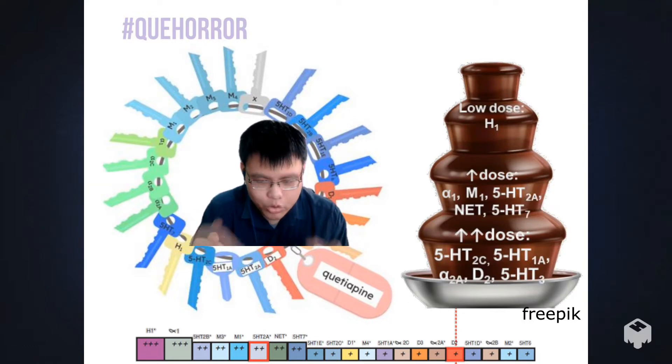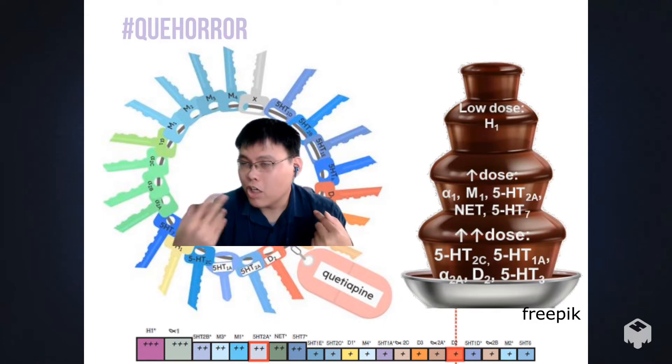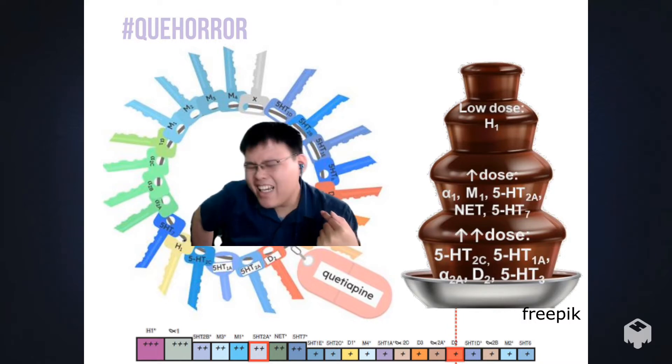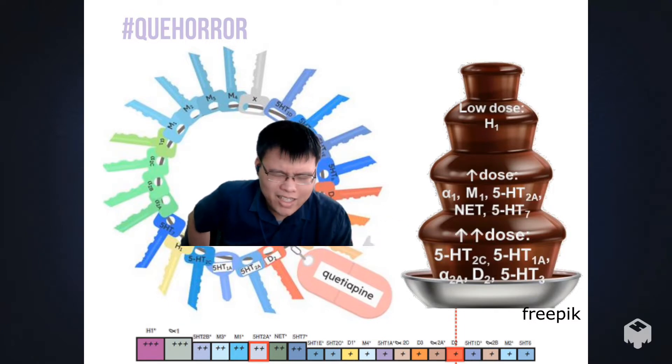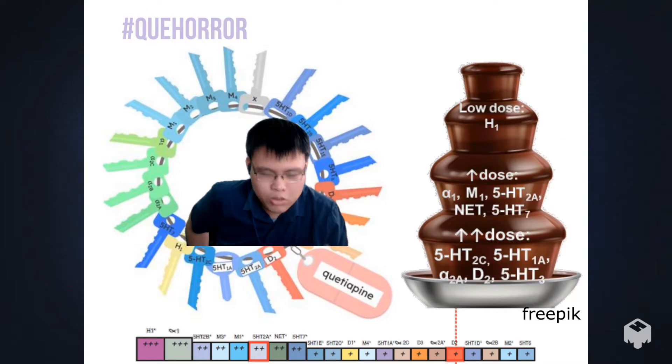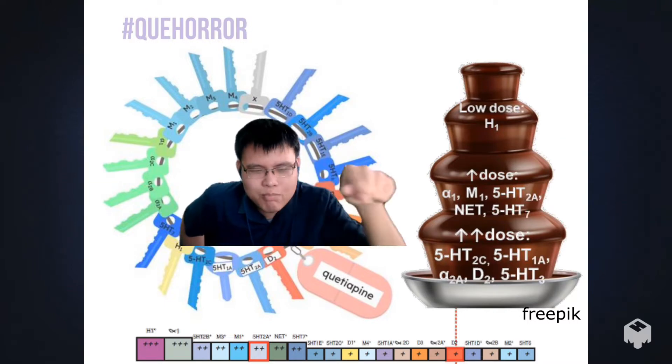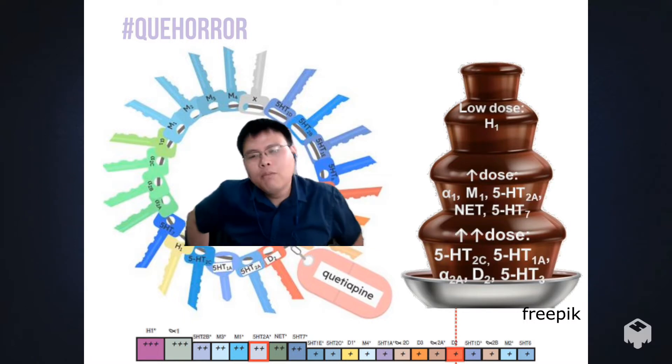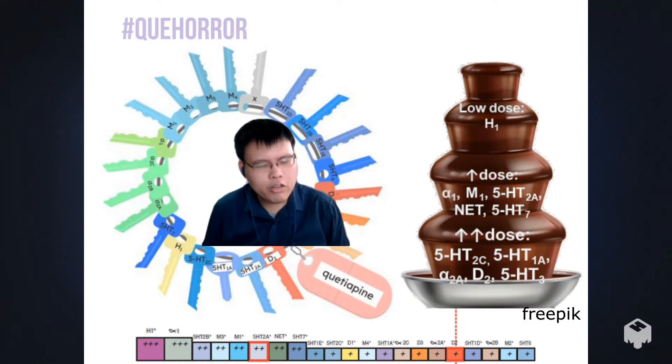If you look at studies like Pillinger et al. 2019, Yoshida and Takeuchi 2020, they did a review on dose dependency of side effects because the idea is: oh, at low doses the other receptors aren't bound to a significant extent to cause side effects. But what if those side effects are not dependent on dose? What if you need only a tiny smidgen of chocolate splatter on the lower receptors to get a side effect?